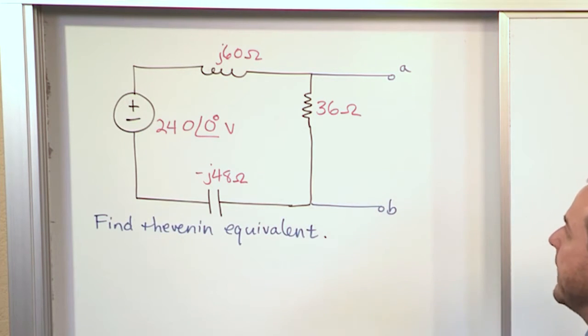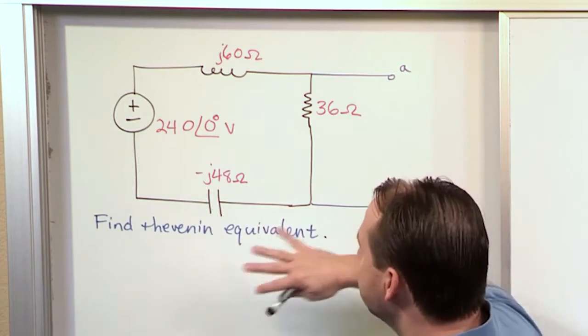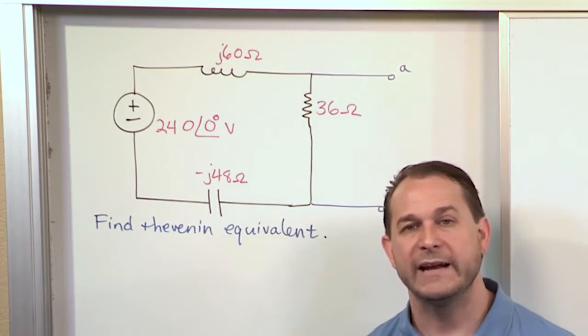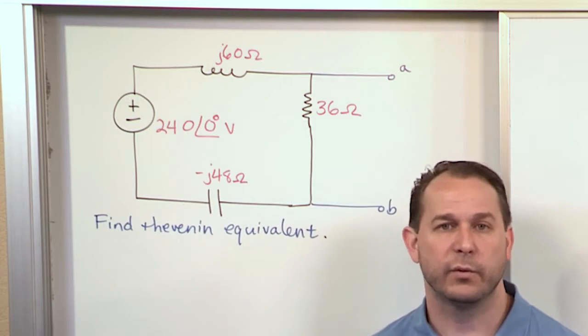And what we're asked to do is find the Thevenin equivalent between terminals A and B. So basically what we want to figure out is how can we replace this whole entire thing with a single voltage source, the Thevenin equivalent voltage, and a single impedance, the Thevenin equivalent impedance.